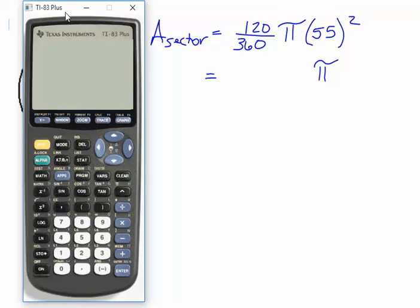So when we go to our calculator, we type in everything but the pi, 120 divided by 360 times 55 squared. And then we also tell it that we want to go to math, convert to fraction, hit enter, and it makes it into an improper fraction for us.